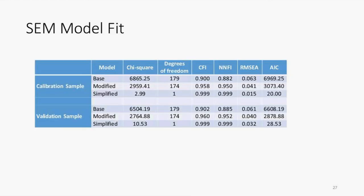Looking at fit statistics — specifically the comparative fit index and non-normed fit index, where values closer to one indicate better fit and anything over 0.95 is considered very good — the modified model with all variables included had very good fit. But the simplified model was very close to one, possibly due to removing noise from many different measures of the same latent domain. Importantly, physical functioning and depressive symptoms were the key domains noted by the Fried phenotype of frailty, showing commonalities between different measures.